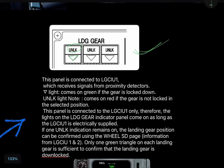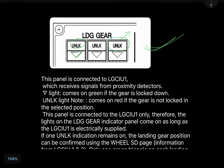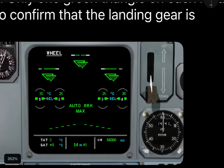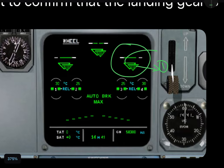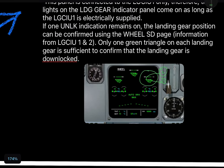If one unlock indication remains on, you can confirm the landing gear position by looking at the wheel SD page, because that page takes information from both LG CIUs. You will see two triangles on that page — one triangle's information comes from LG CIU 1 and the other from LG CIU 2. Any one green triangle is sufficient to confirm the position of the landing gear.